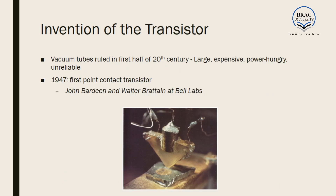Now let's go to the actual history of how everything started. The start of integration has to begin from the invention of transistors. Before transistors were invented there were vacuum tubes, which were there until the middle part of the 20th century. They were very large and would heat up the room. The heat is actually lost energy, so if more heat is dissipated there is more loss. As a result they were very power-hungry devices, and since they were very large they were also very expensive to produce — so vacuum tubes were not suitable.